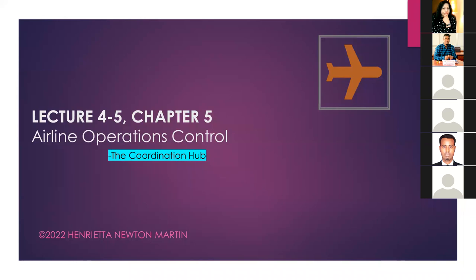Today we are going to learn about Airlines Operation Control, which is considered the coordination hub of airline operations. It is also called the nerve center of airline operations. Much of the operations take place here — monitoring air traffic, ensuring effective delivery of services, and seeing that services are not disrupted. Similarly, the Airport Operations Control Center is considered the nerve center of the airport.